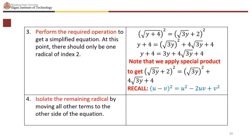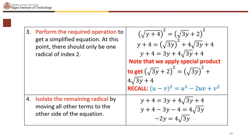Isolate the remaining radical. We have y plus 4 equals 3y plus 4 times square root of (3y) plus 4. Moving 3y and 4: y plus 4 minus 3y minus 4 equals 4 times square root of (3y), giving minus 2y equals 4 times square root of (3y).